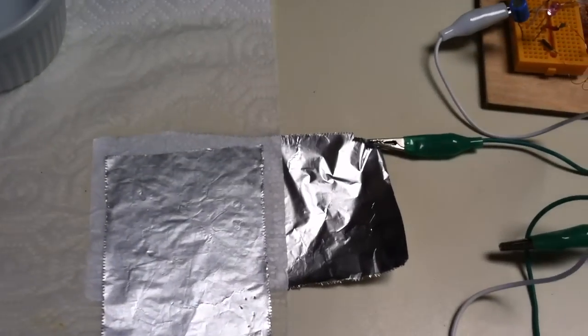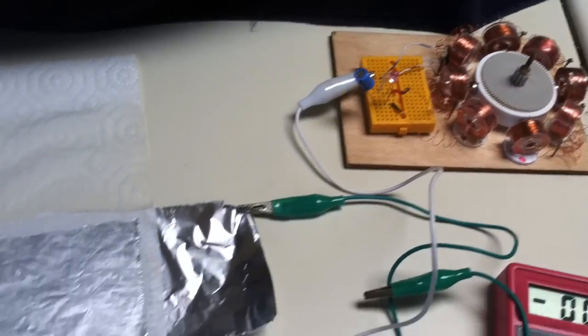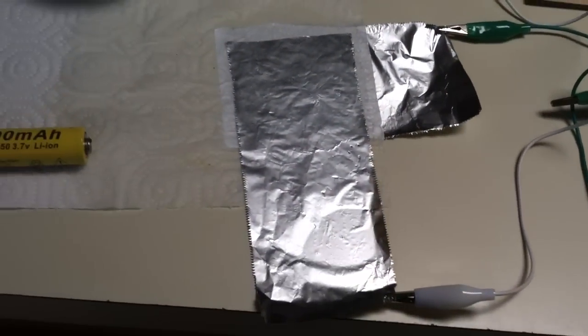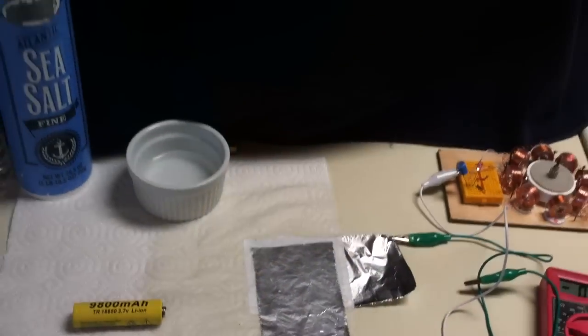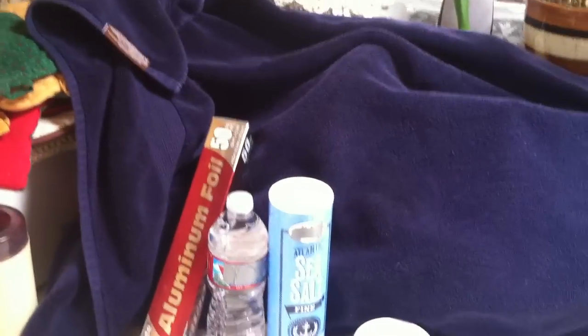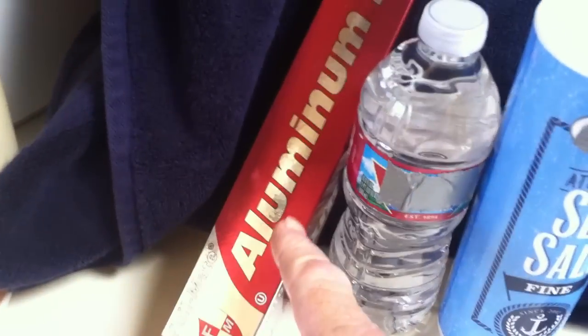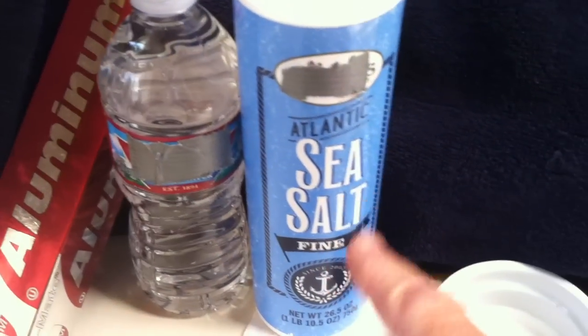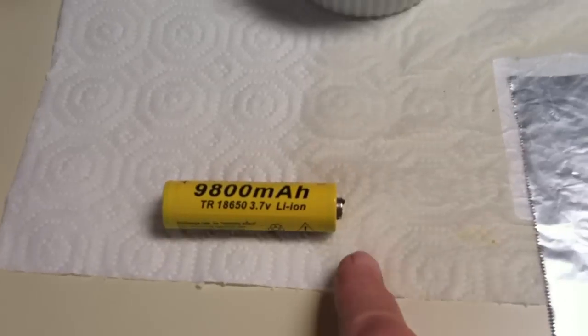I can't believe this worked, and I don't know why we haven't done this before. Maybe we haven't, I just haven't done it. I'm in my kitchen here, and I'm just using plain old aluminum foil. I get it at the dollar store. This is bottled water and this is sea salt, and this is a paper towel.